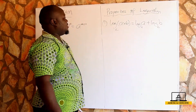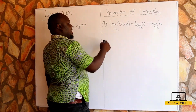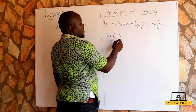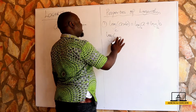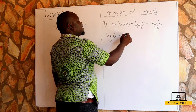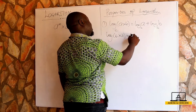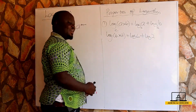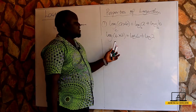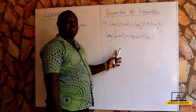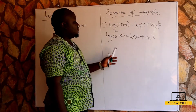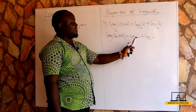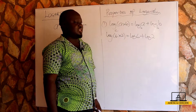For example, if we have log six times two, this is the same as log six plus log two. If we write logarithm without any base, it means it is in base ten. So log six times two to the base ten is equal to log six to the base ten plus log two to the base ten.